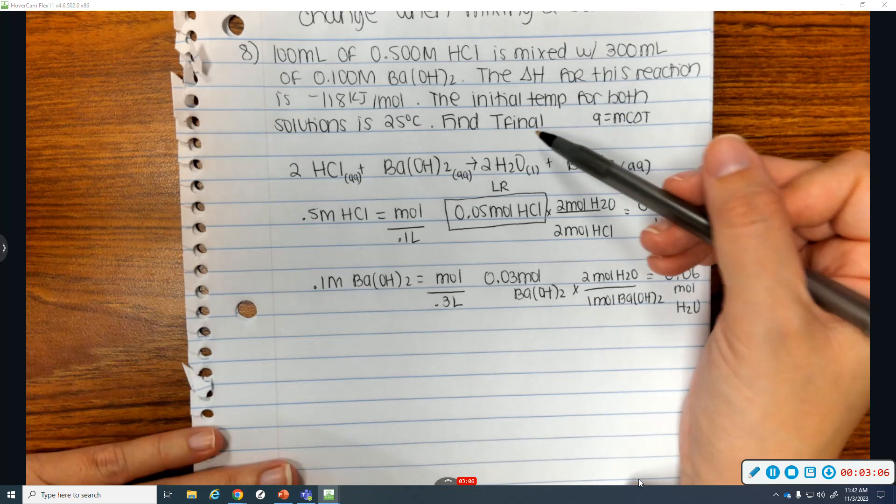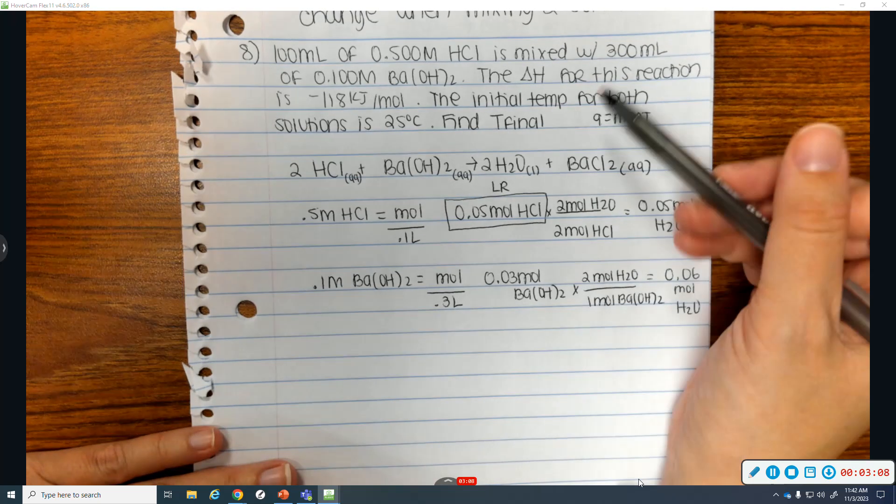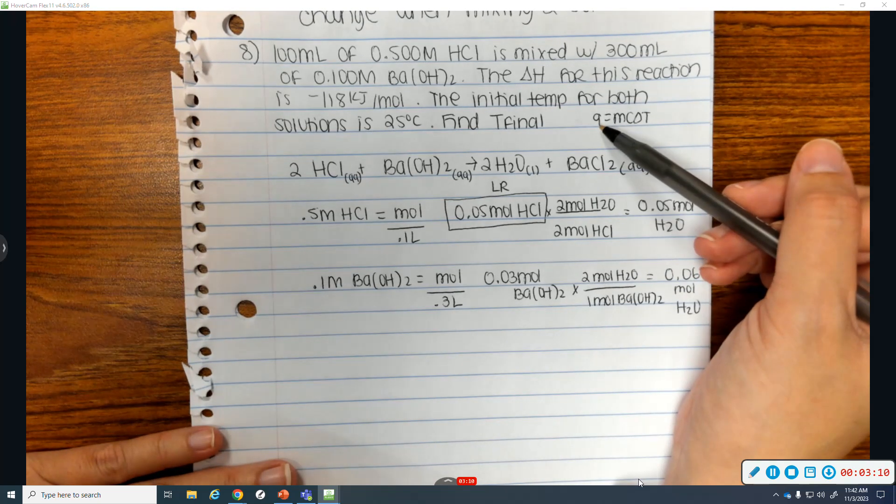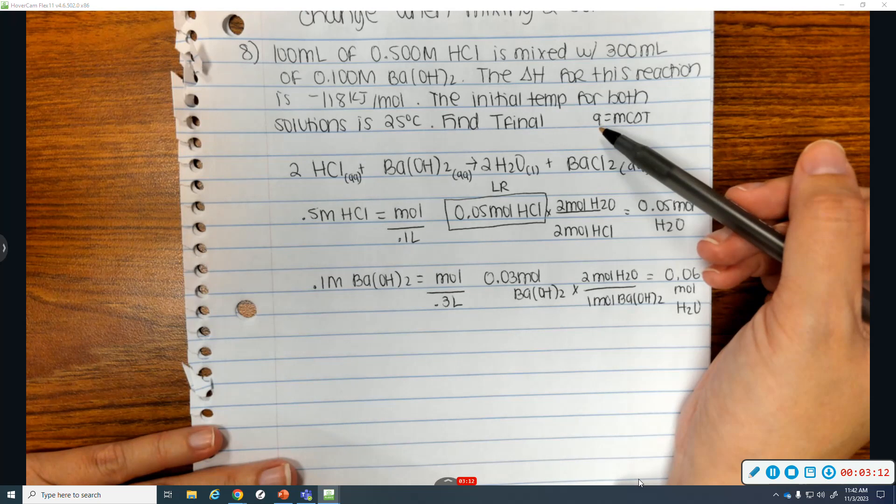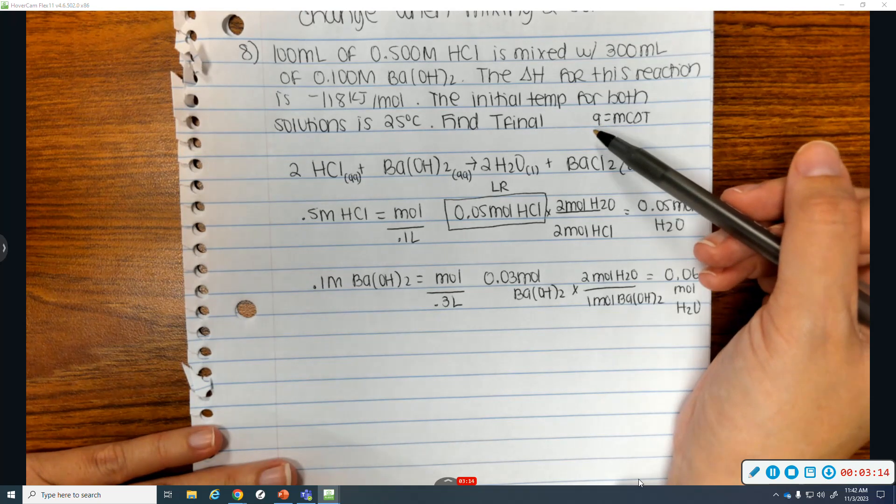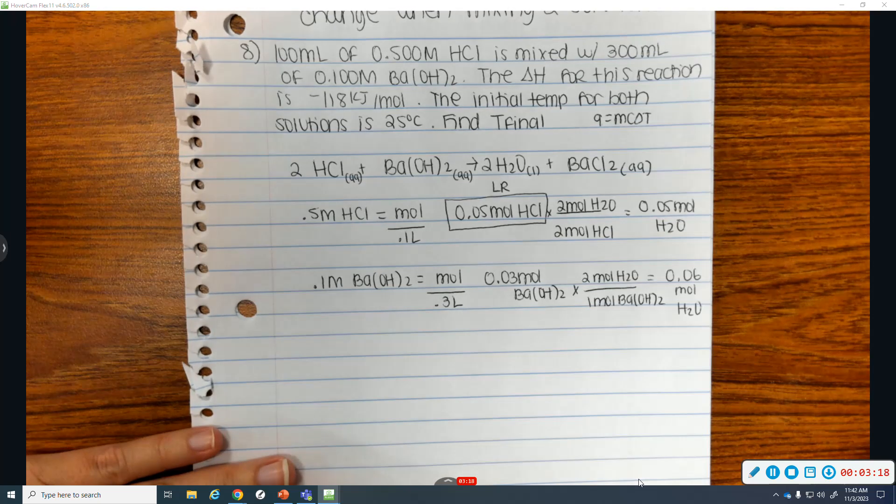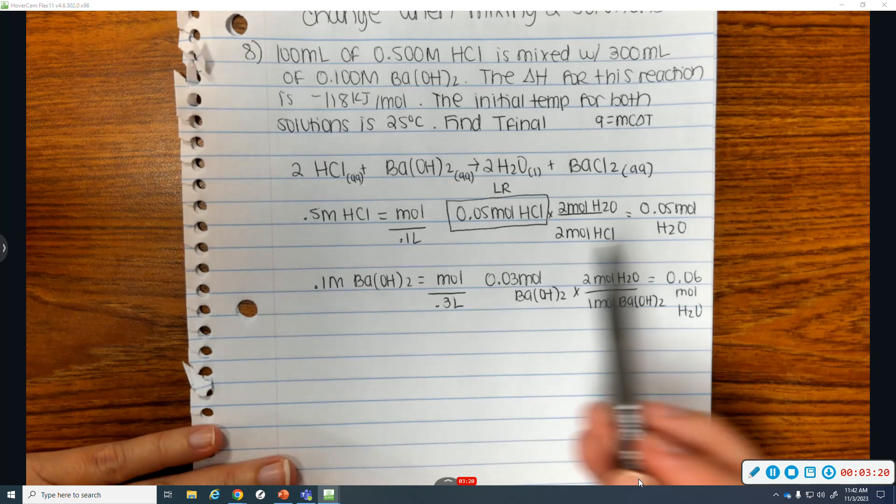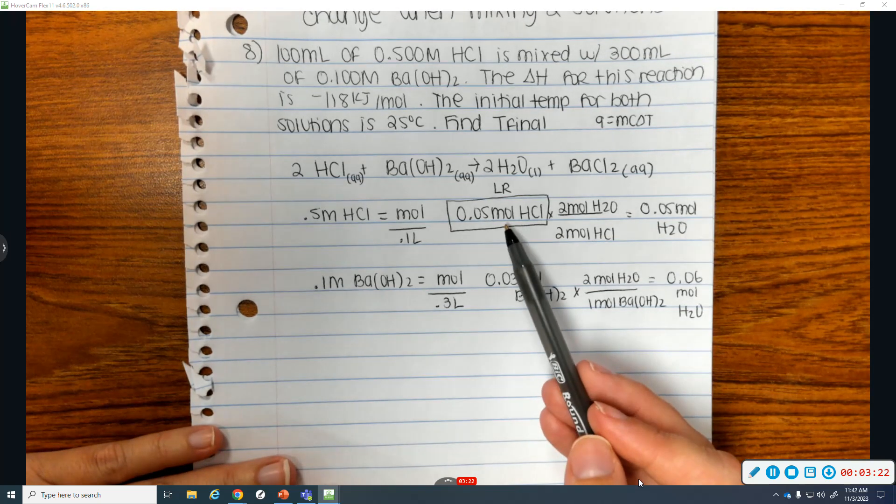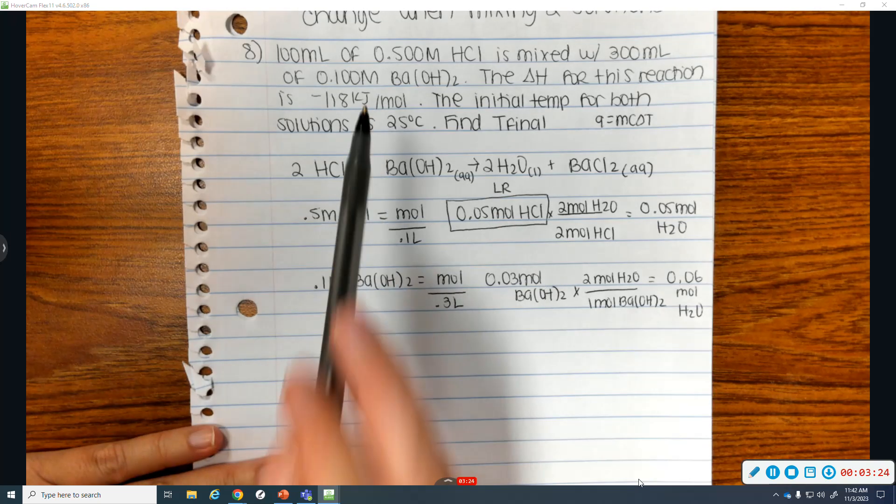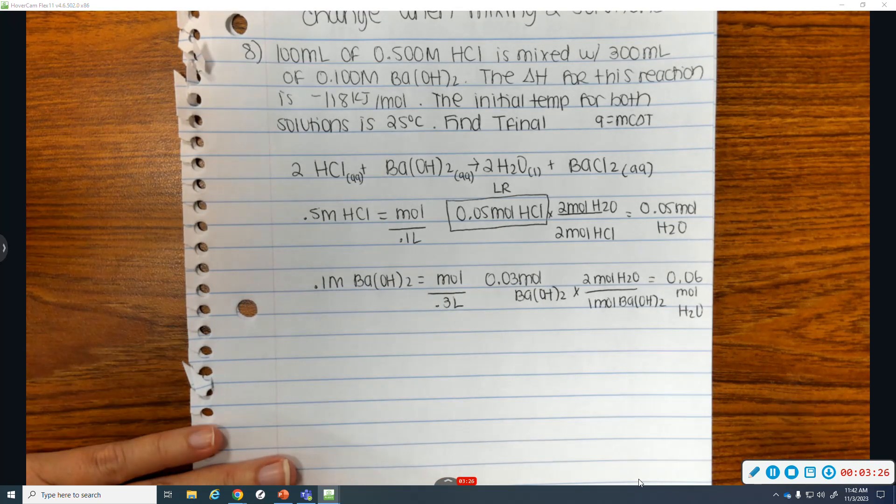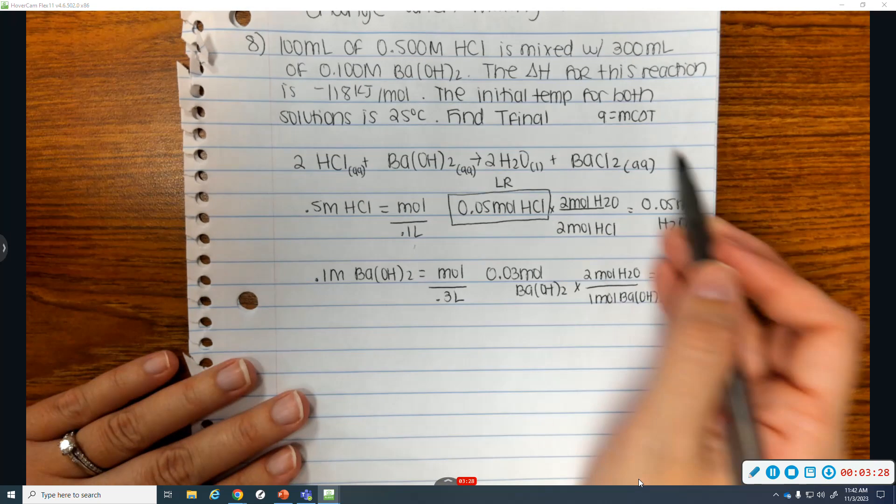And because this is, again, temperature changes are always for the surroundings. I need how much heat did the surroundings either absorb or lose. I need to find a Q for the surroundings. Well, I don't have anything about the surroundings. But I do have my moles of HCl. And I have the enthalpy change for this reaction. And I have a chemical equation.